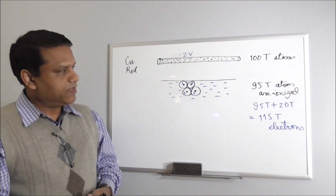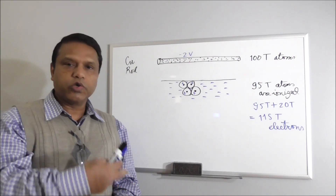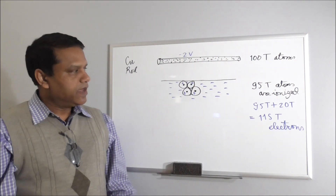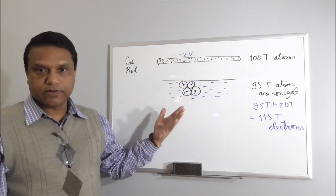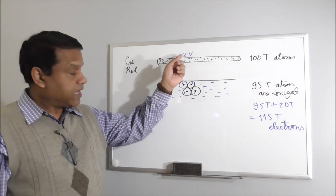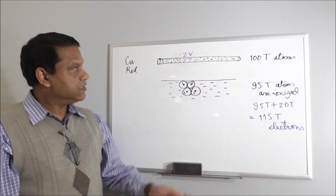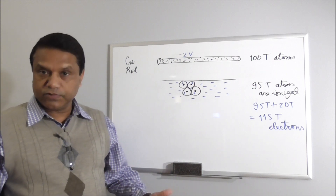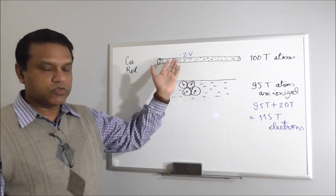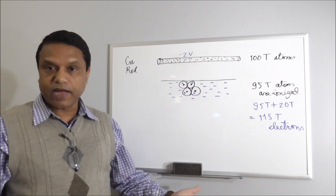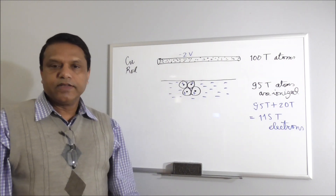Now let's assume something more. Say we added even more electrons — not 20 trillion but 40 trillion electrons to this copper rod. As a result, it would have 40 trillion more electrons than positive charge. Will the voltage remain the same or change? The voltage will also change. Instead of minus 2 volts, it will be a higher negative voltage — maybe minus 3, minus 4, or minus 5 volts. But in general, the negative voltage will go up.